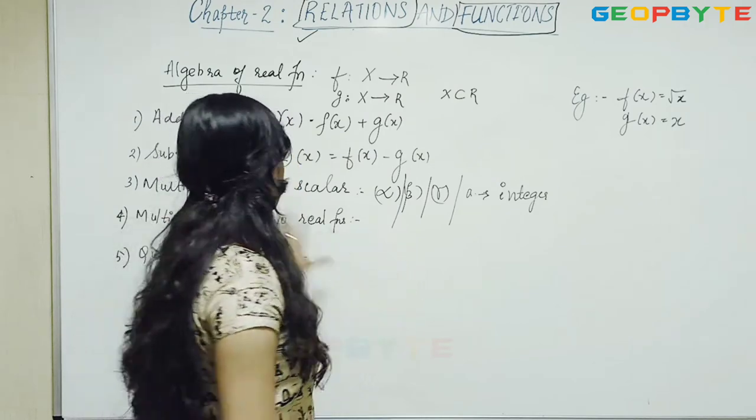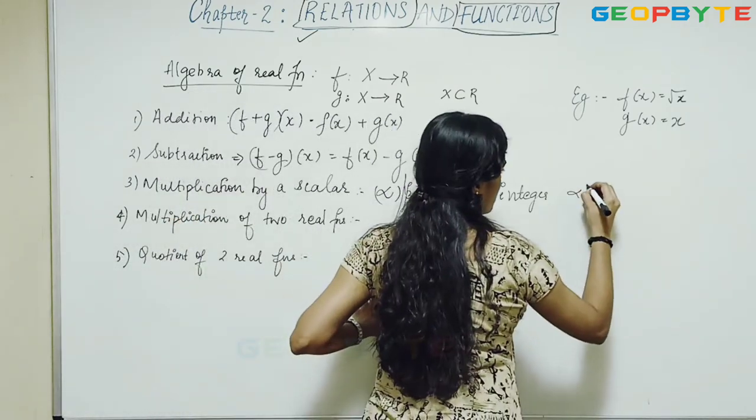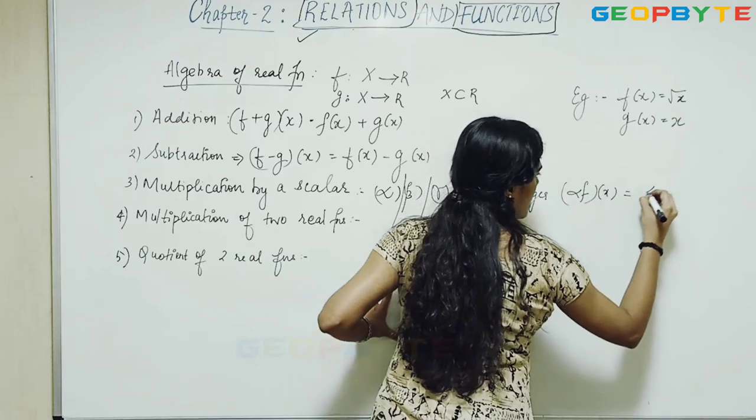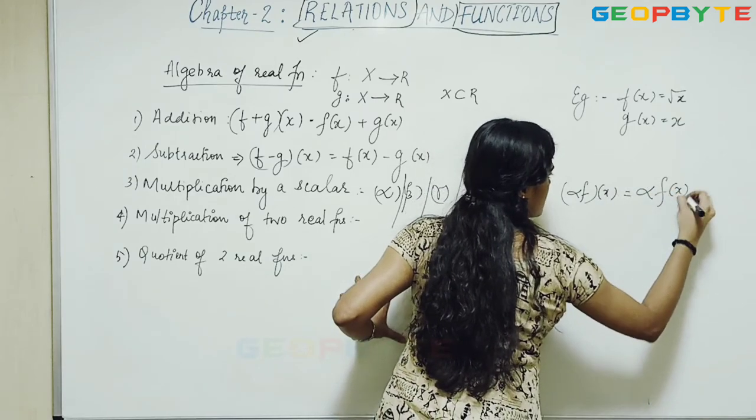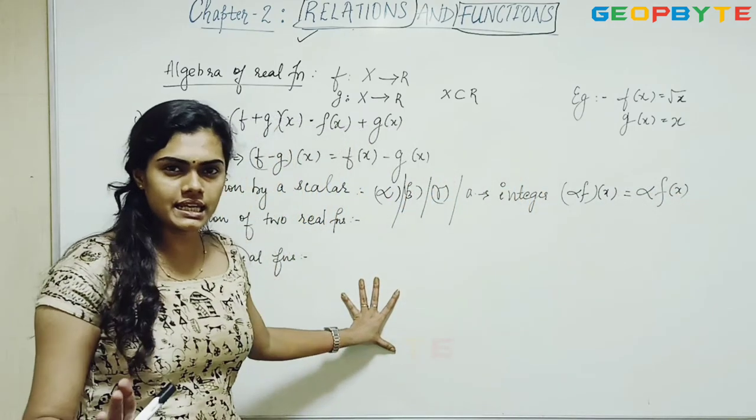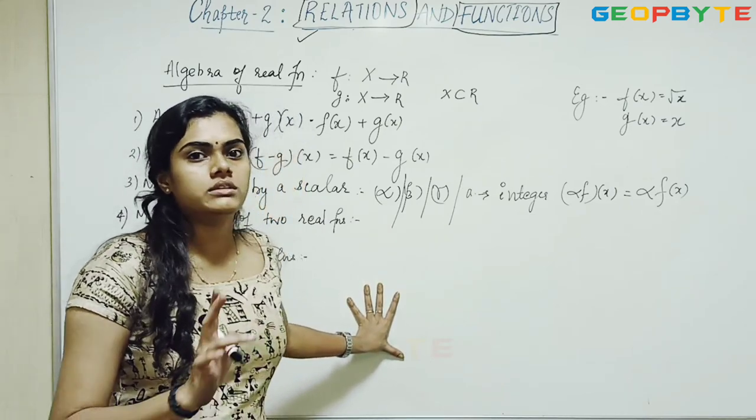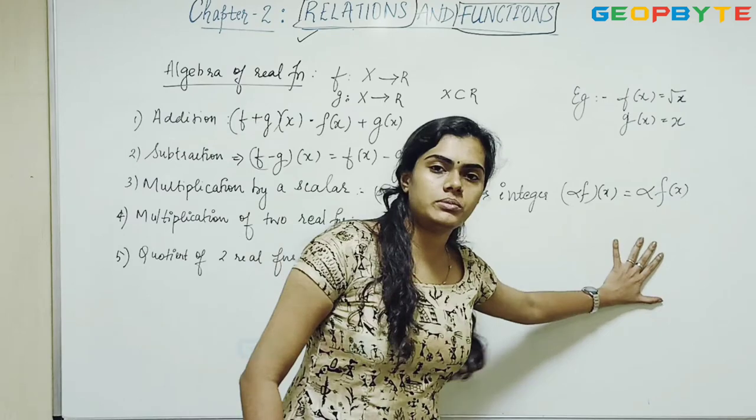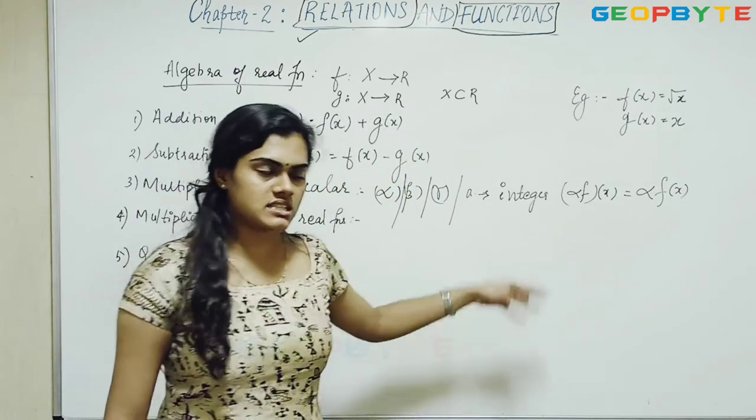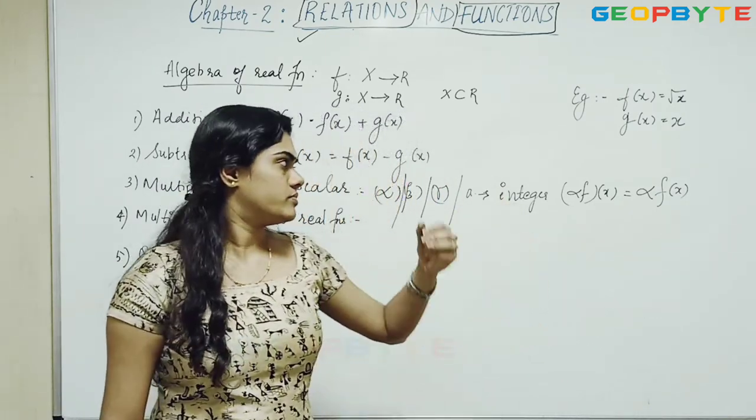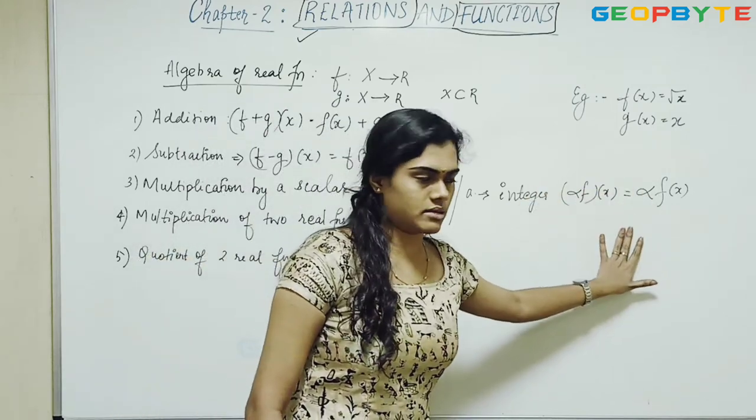So, how will I multiply? Alpha f of x is equal to alpha into f of x. If my f of x is 3x, then my alpha, if my alpha is 2, then my alpha f of x would be 2 into 3, that is 6. We just have to multiply numbers, just like my natural numbers.